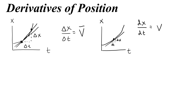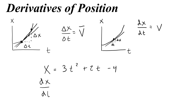If we write the slope not as delta x and delta t but as little dx and little dt, then what we have found is the instantaneous velocity — the velocity at that exact point. That is the derivative. So if I have some original function x equals 3t squared plus 2t minus 4, then its derivative dx/dt would be 6t plus 2, and this derivative is actually an equation for velocity.